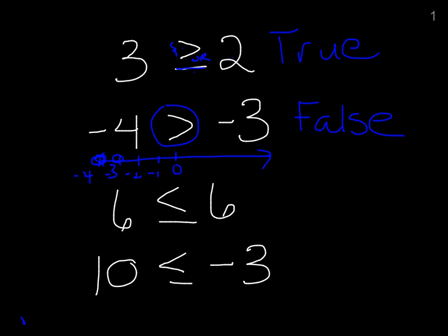Looking at the next one: is 6 less than or equal to 6? 6 is not less than 6, but it is equal to 6. Since we have 'or' in there, this is true because it is equal to 6. And on the last one, 10 is less than or equal to negative 3. 10 is a positive number and negative 3 is a negative number, so 10 can't be smaller than a negative number, and it's certainly not equal to it. So this one is false.